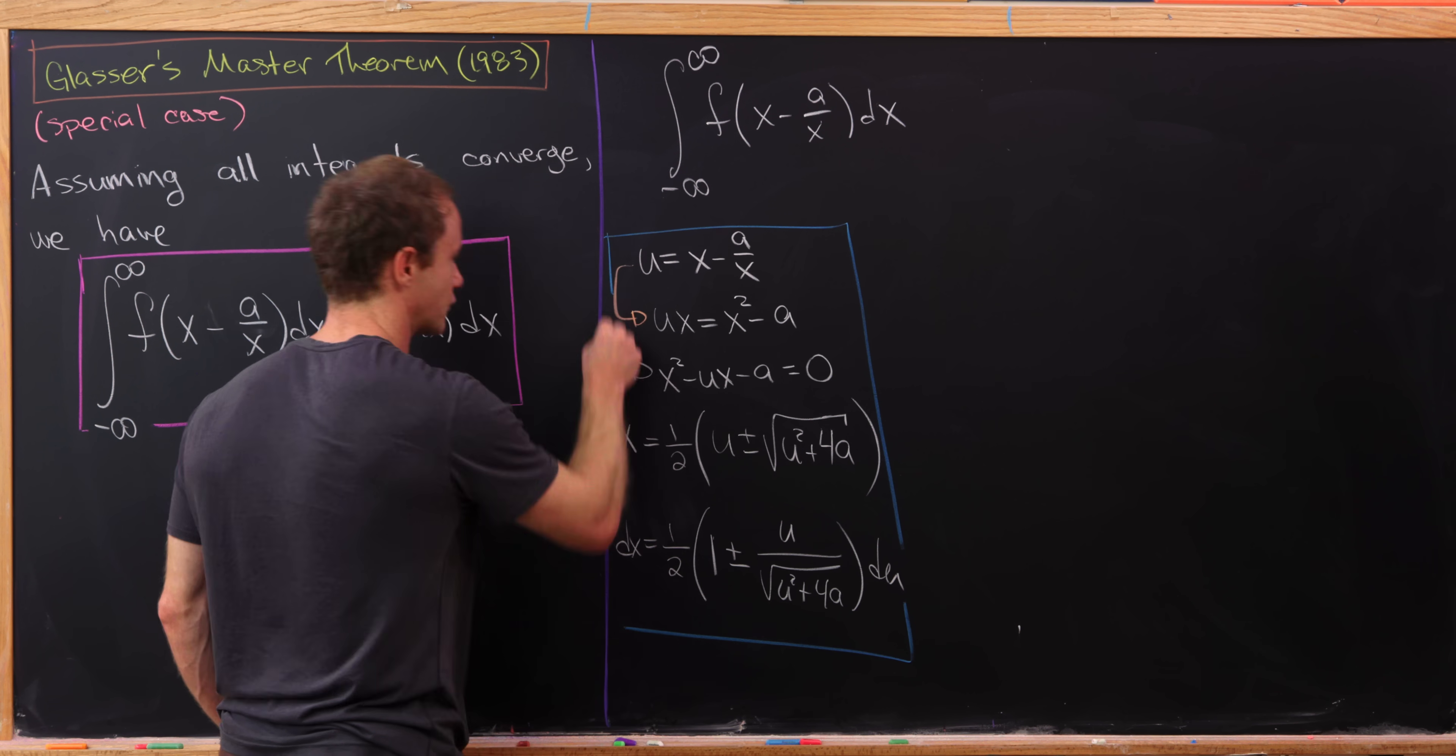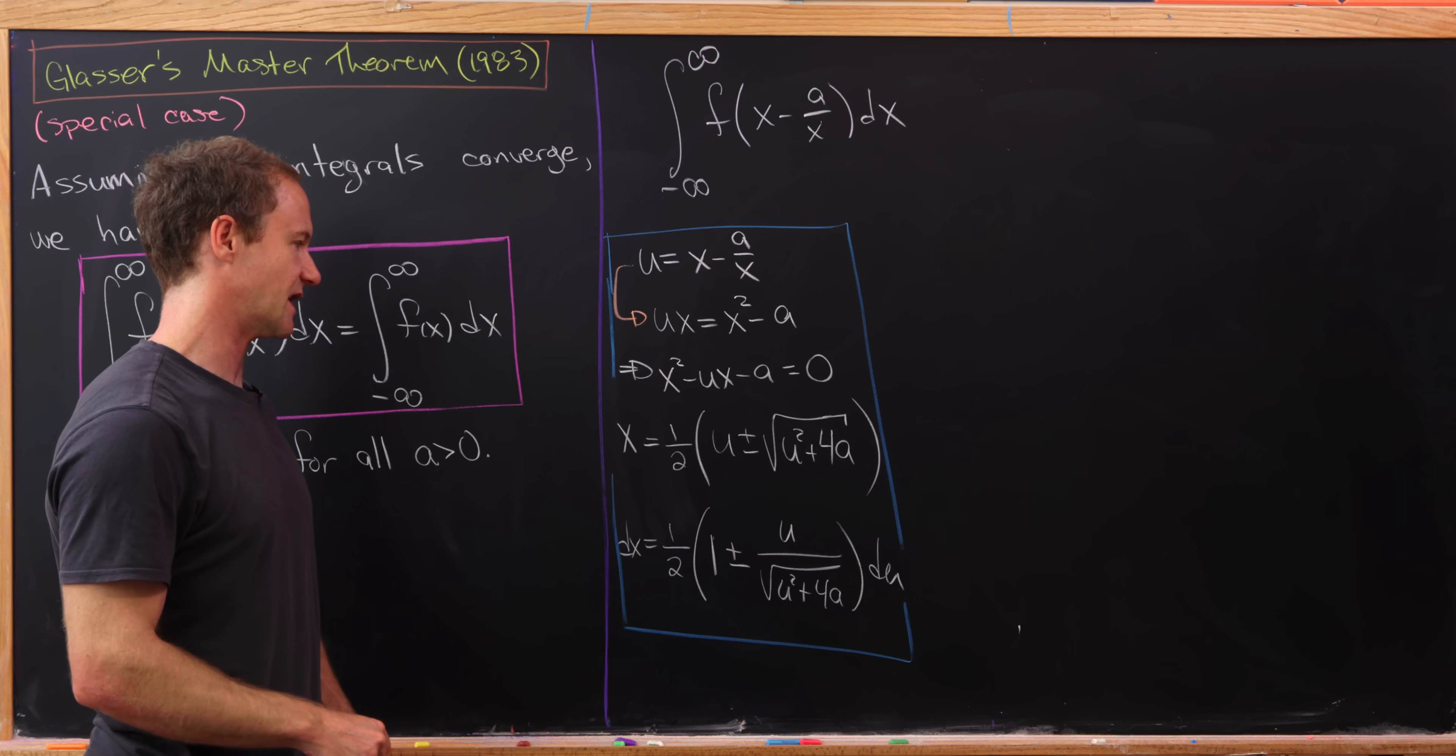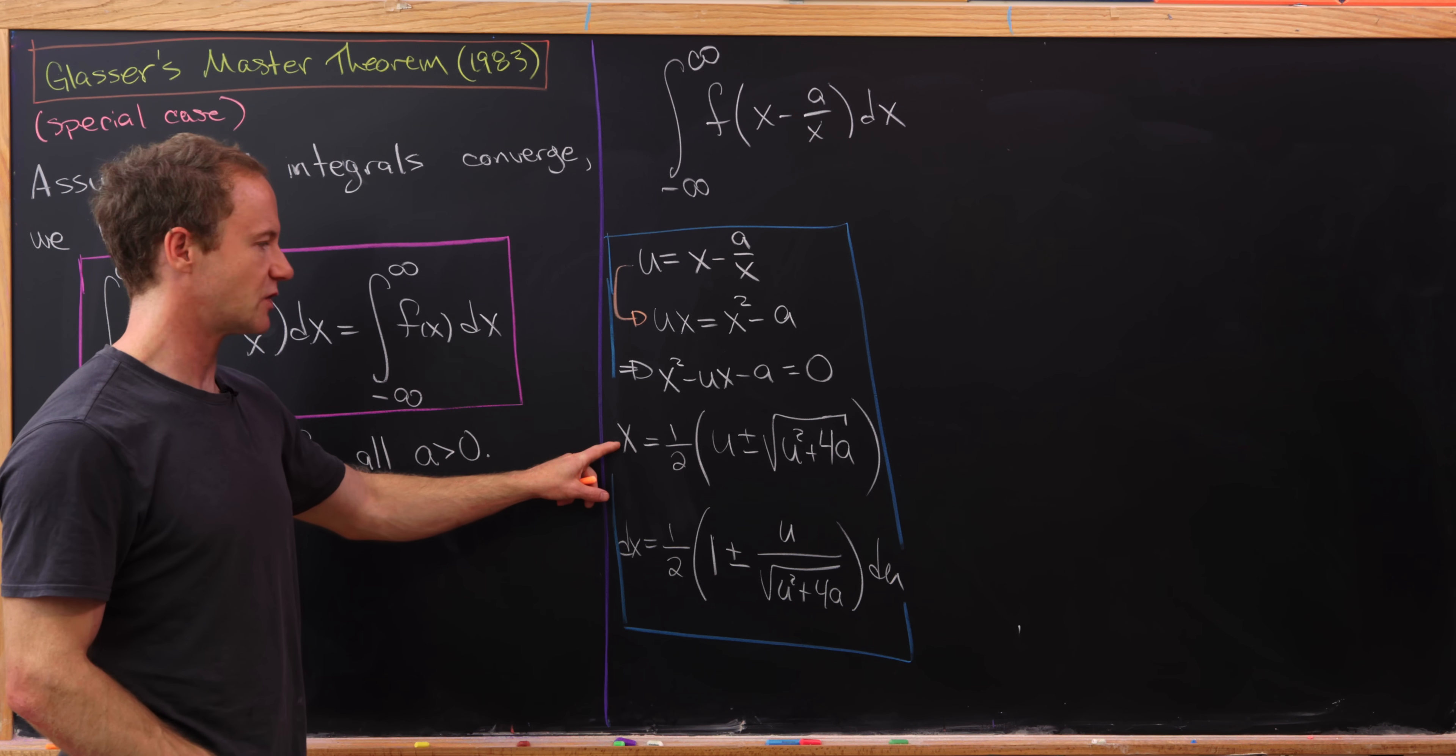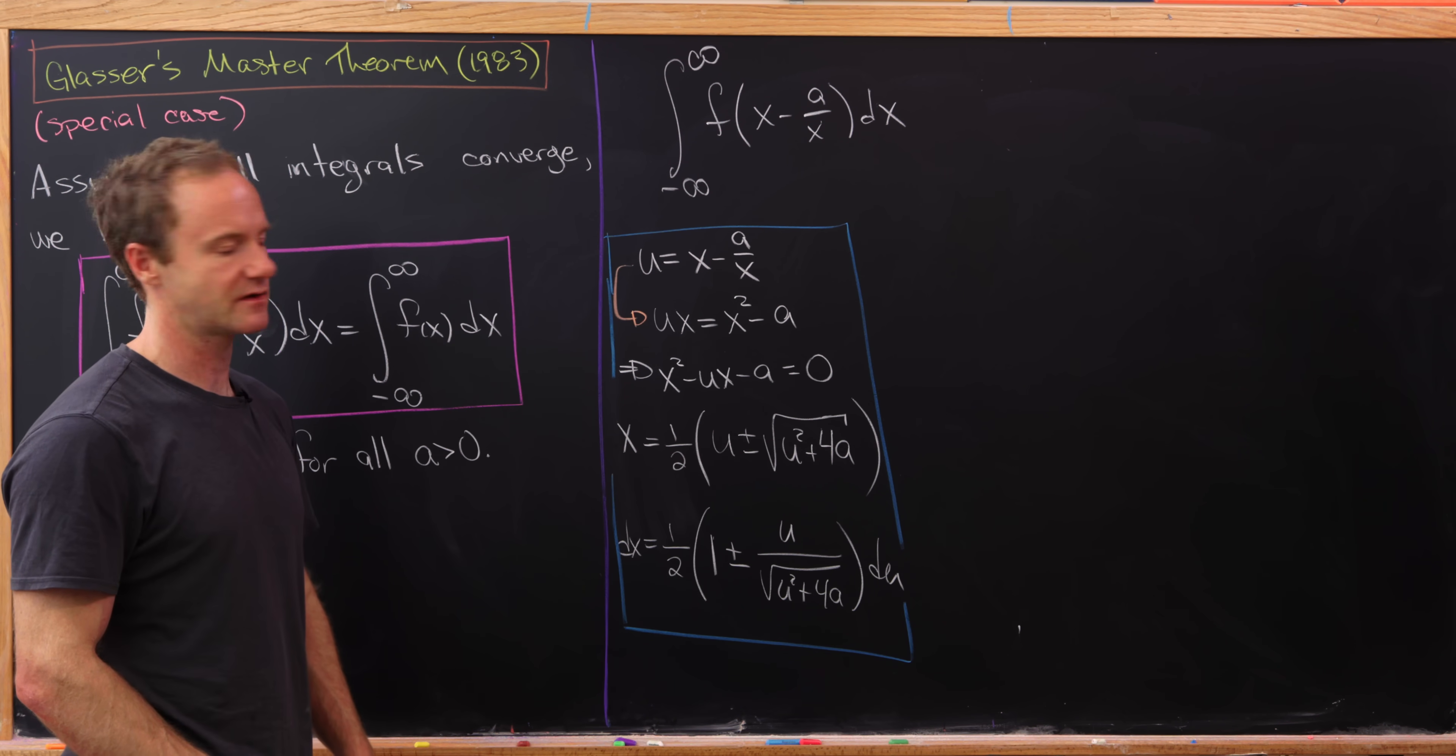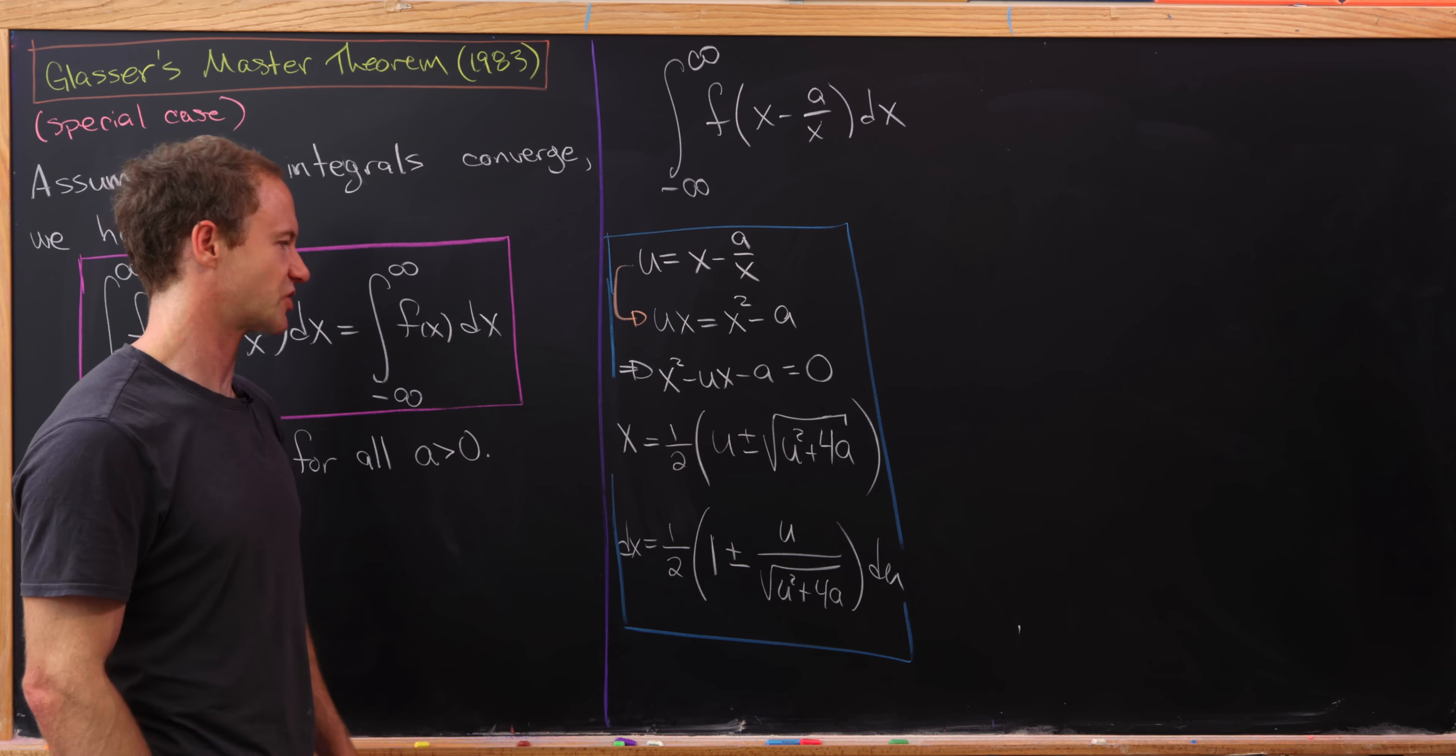Let's revisit this question about when do we choose the plus and when do we choose the minus. Notice that if we have a plus sign here, then x will always be positive. Whereas if we have a minus sign here, x will always be negative. That's because this radical is definitely bigger than or equal to this u term here, so it'll always subtract off.